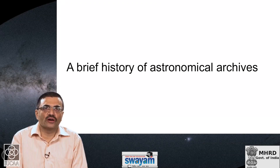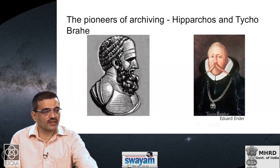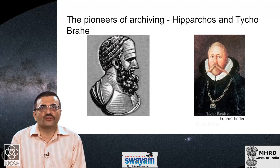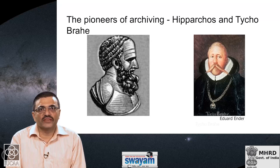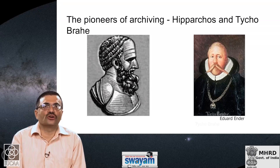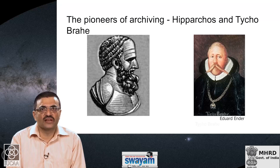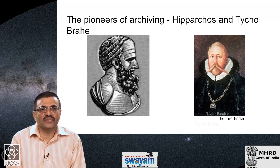We will begin by giving you a brief history of archives in the field of astronomy. The story begins nearly 2000 years ago with a Greek astronomer named Hipparchos, who first decided that he should make a catalogue of the stars that he saw in the night sky. He constructed such a catalogue, made up some constellations and recorded it. This probably represents the earliest attempt at creating an astronomical archive.